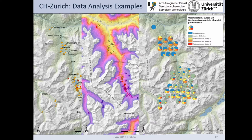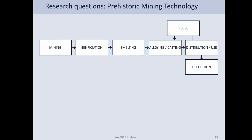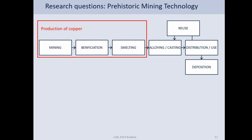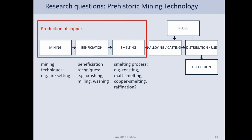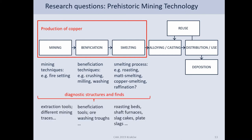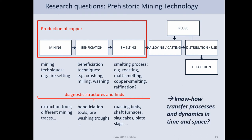We see we have three different structures of data, often serving different purposes. Now we look at the questions behind — what should be investigated in the project. This is the prehistoric mining technology, specifically copper production, which starts with the mining, then comes the beneficiation of the ore, then comes the smelting. There are different technologies and processes in each of these areas, and diagnostic structures and finds that tell you what kind of mining and smelting was used. The end goal was to learn more about the know-how transfer processes and their dynamics in time and space.